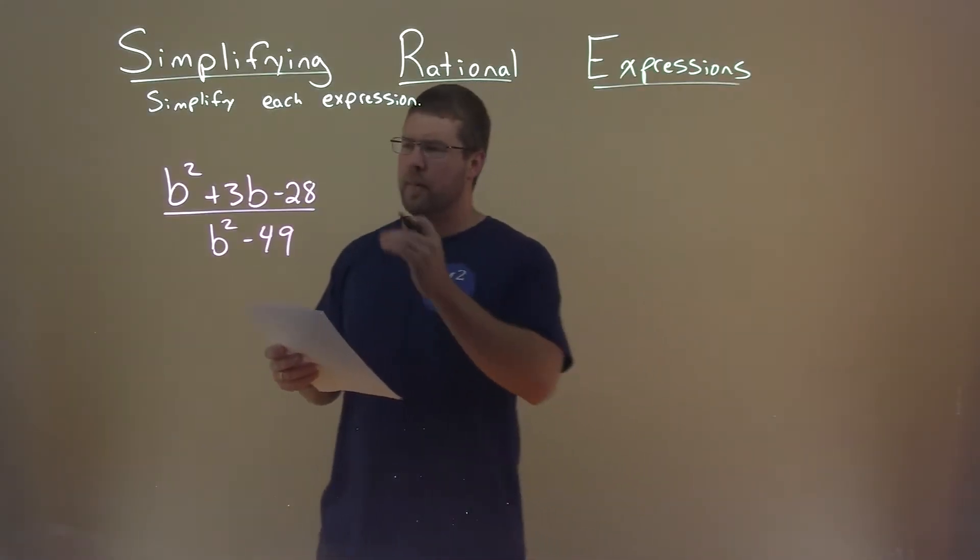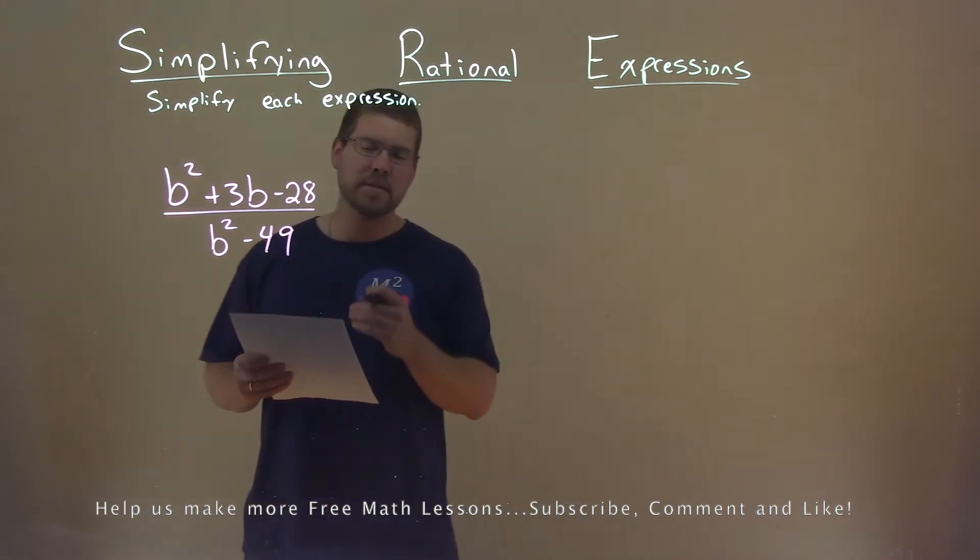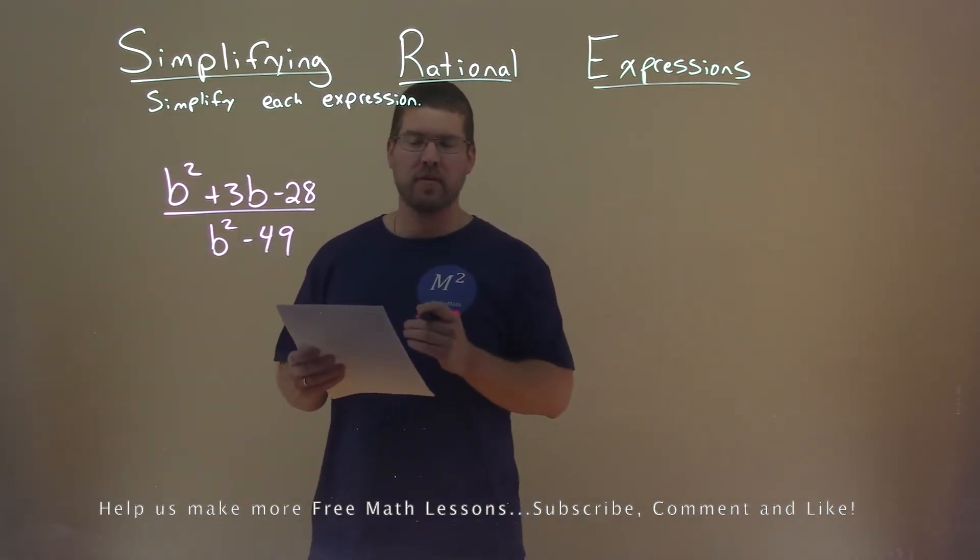We're given this problem right here, b squared plus 3b minus 28 over b squared minus 49, and we need to simplify this expression.